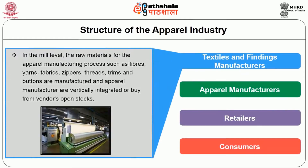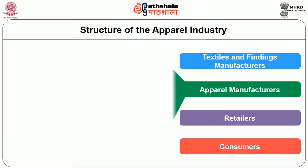Broadly, the skeleton of the apparel industry can be divided into four stages. Stage 1: Textile and finding manufacturers. At the mill level, the raw material for the apparel manufacturing process — such as fiber, yarn, fabric, zipper, threads, trims, and buttons — are manufactured, and the apparel manufacturers are vertically integrated or buy from vendors on open stock.